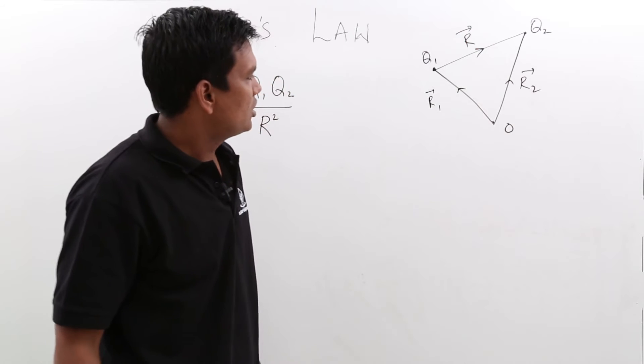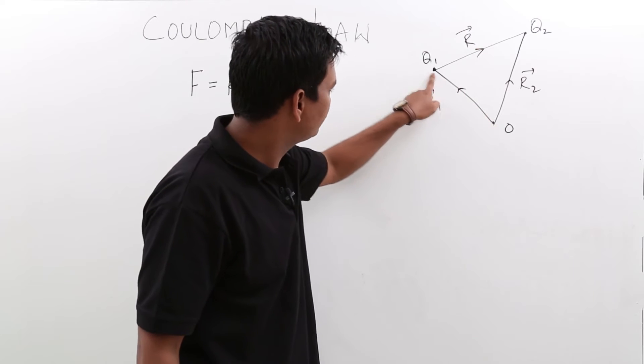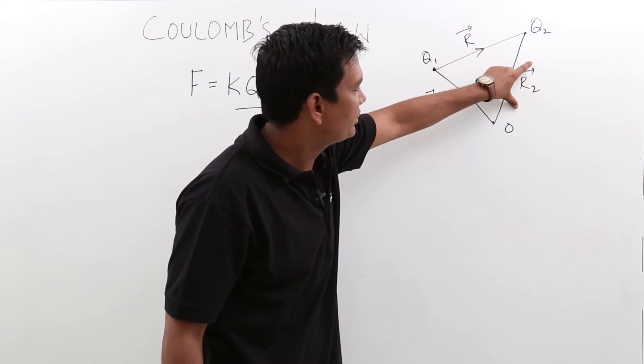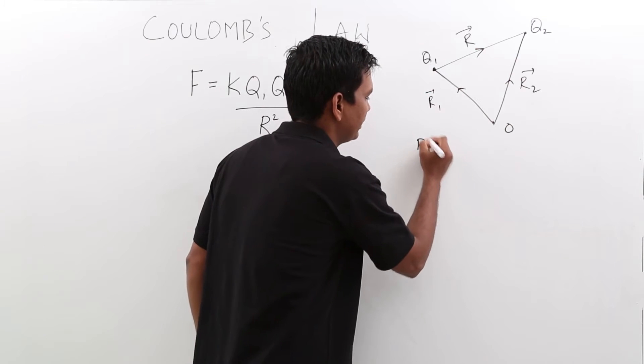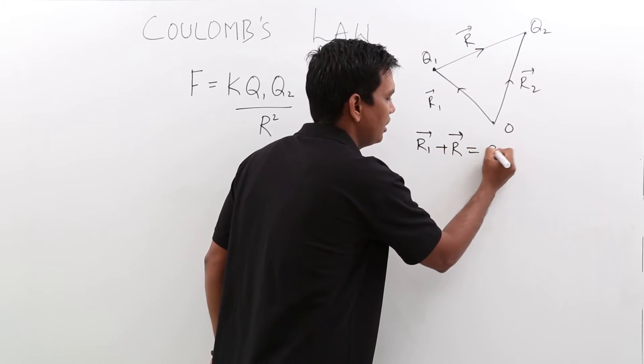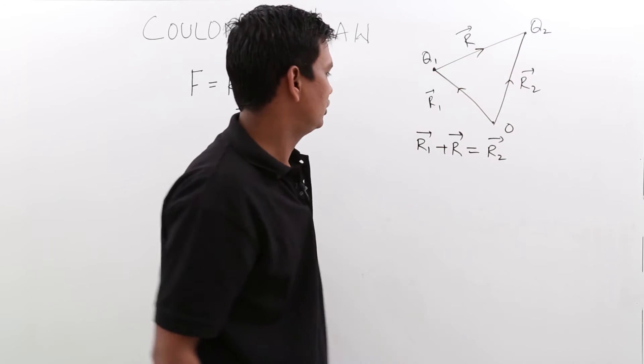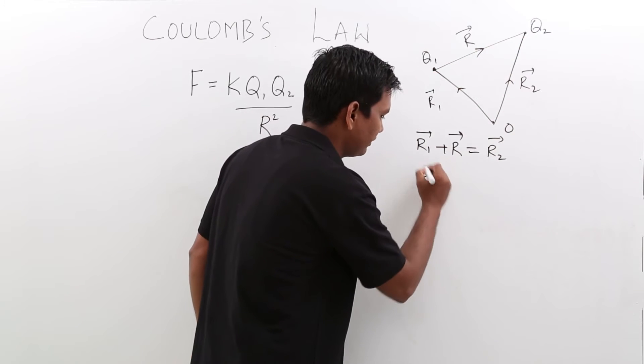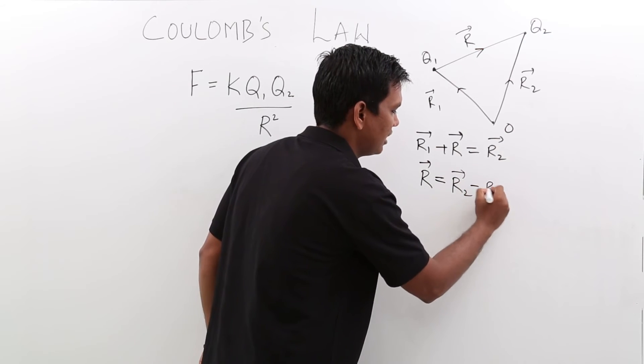Then from the triangle law of addition, as we have already discussed in the previous classes, this vector plus this vector would be equal to this vector. So which is nothing but r1 vector plus r vector would be equal to r2 vector, because r2 vector is the closing side of the triangle. So what would be my resultant r vector? r vector will be nothing but r2 vector minus r1 vector.